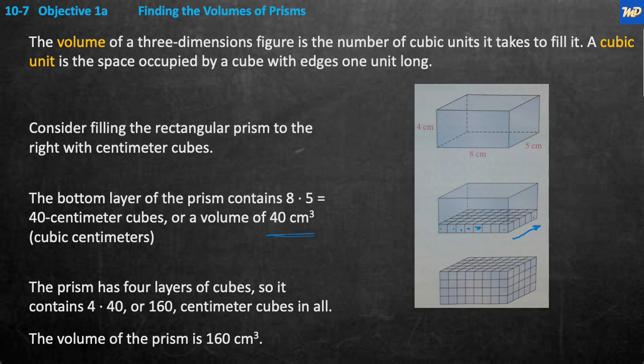So the prism has four layers of cubes. When you see the full picture, there's one, two, three, four layers of cubes. So it contains 4 times 40, or 160 centimeter cubes in all. The volume of this prism is 160 cubic centimeters. Hopefully that clears up what the one cubic long edge was. It could have been a foot, yard, meter, millimeter. Let's move on to the next slide.